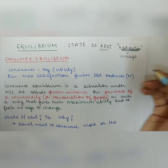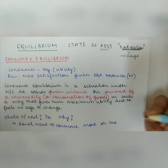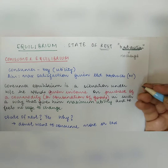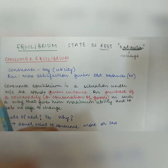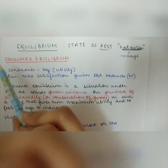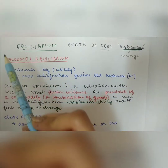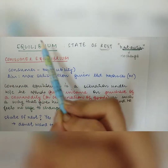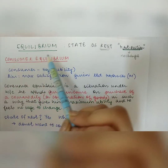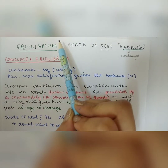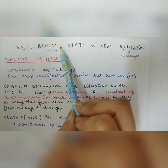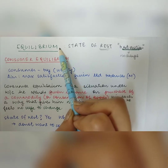In economics, we talk about equilibrium of a consumer, producer, firm, and industry. But here we will be concentrating on the concept of consumer equilibrium. What does equilibrium mean? It is a state of stability or a state of rest where you do not want to shift from the position that you are at.